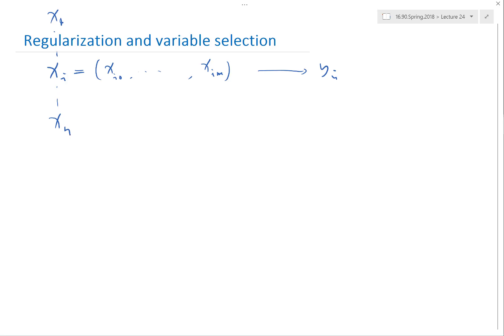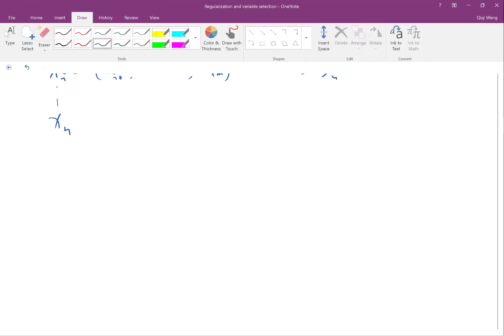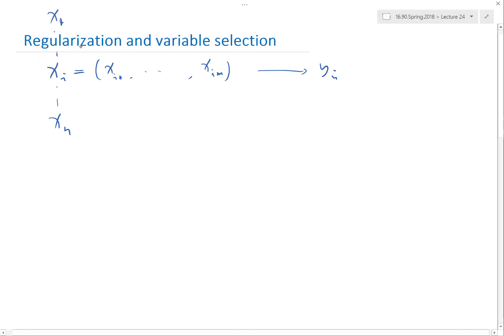That's when the concept of regularization comes in. The idea is to come up with an optimization problem that prevents overfitting by restricting, by basically killing that variable almost automatically if that variable doesn't contribute much. One of the most intuitive ways to construct regularization that gives a problem similar to the spirit of variable selection is the following.